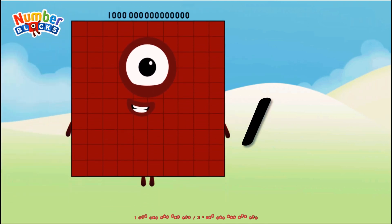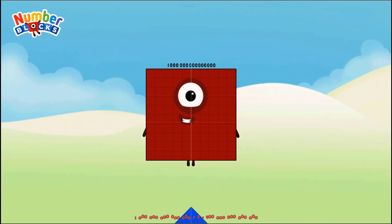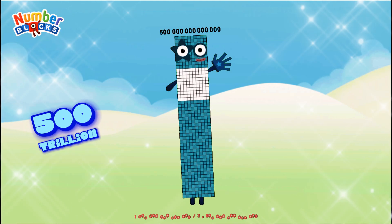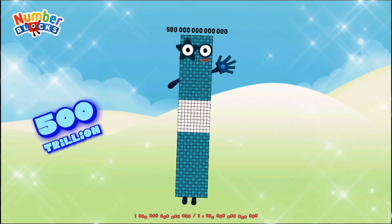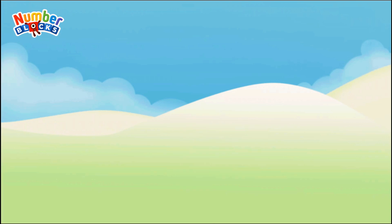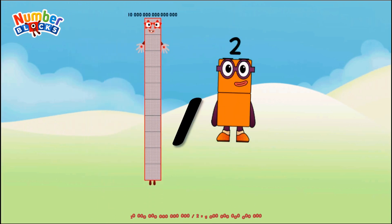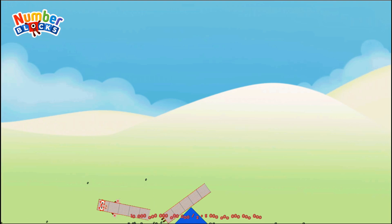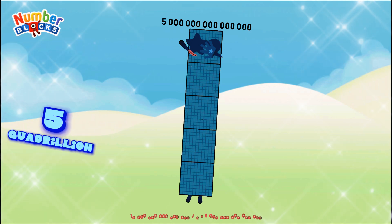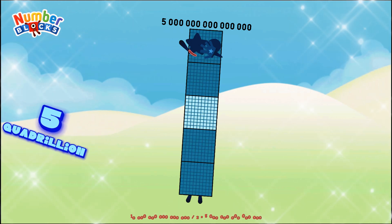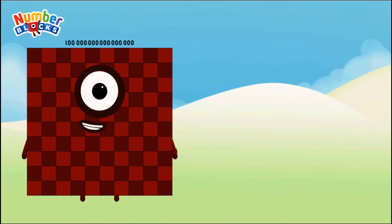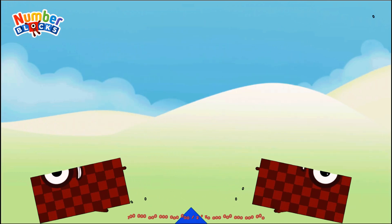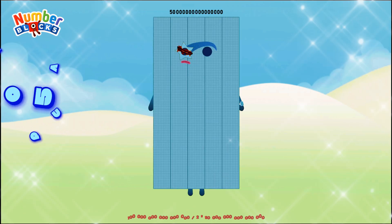One quadrillion divided by two equals five hundred trillion. Ten quadrillion divided by two equals five quadrillion. One hundred quadrillion divided by two equals fifty quadrillion.